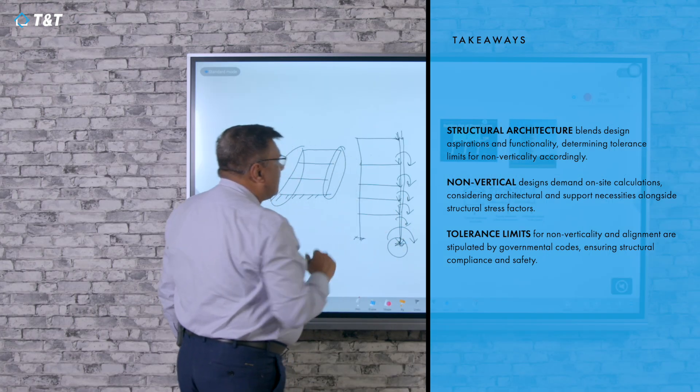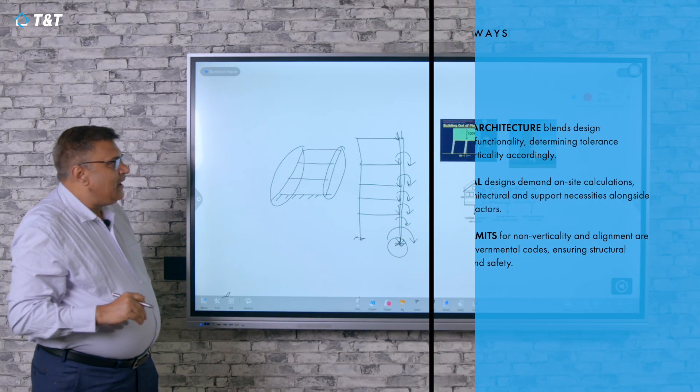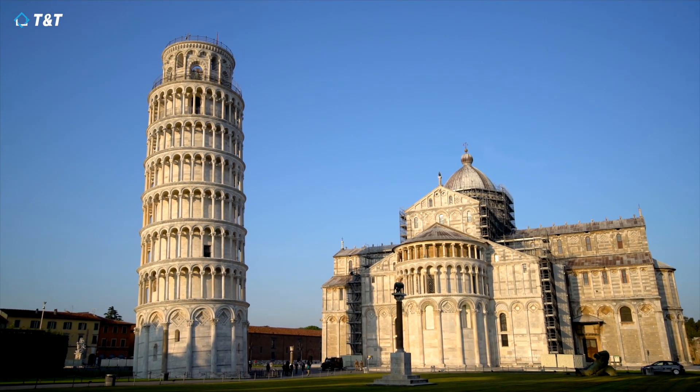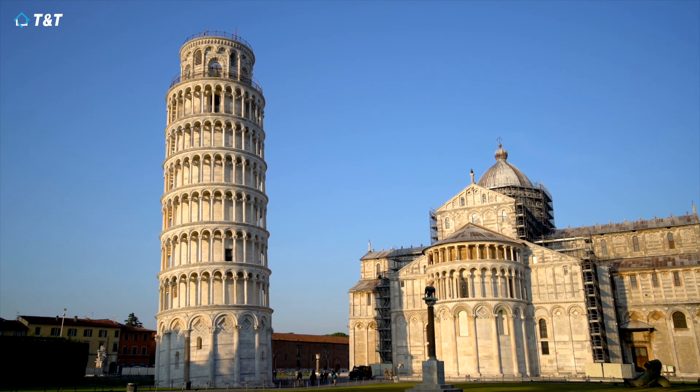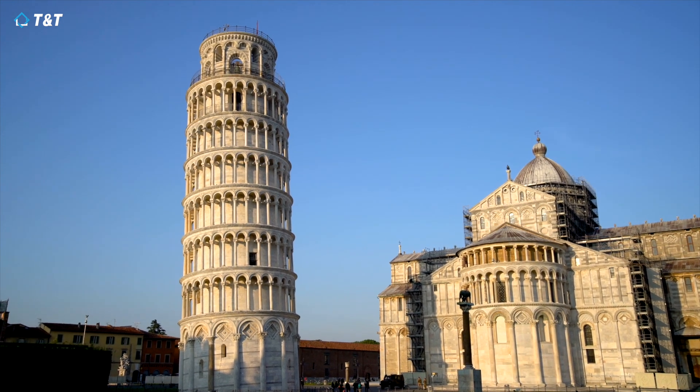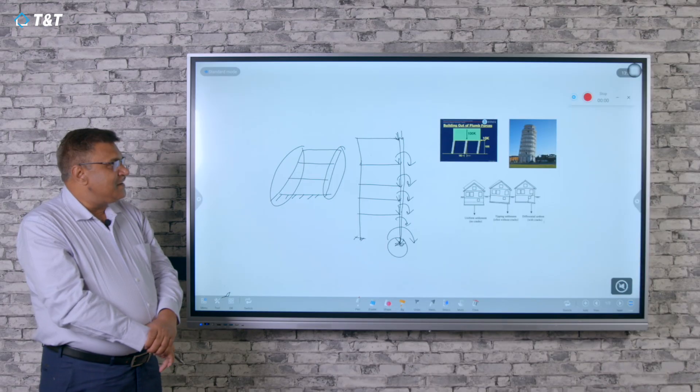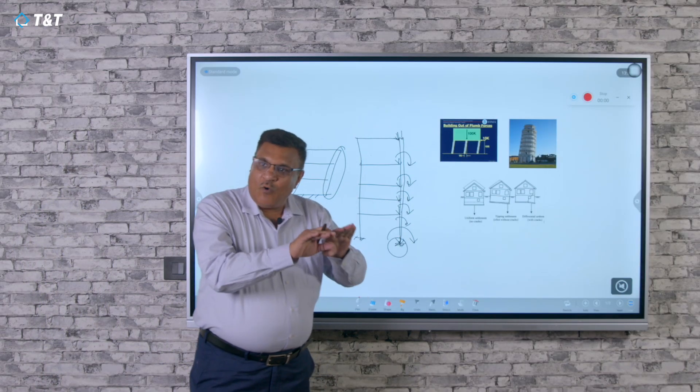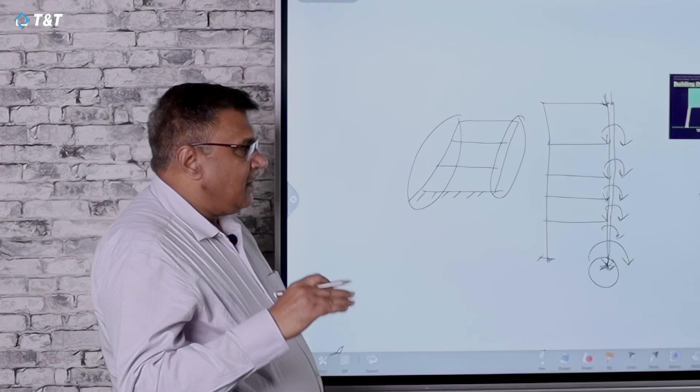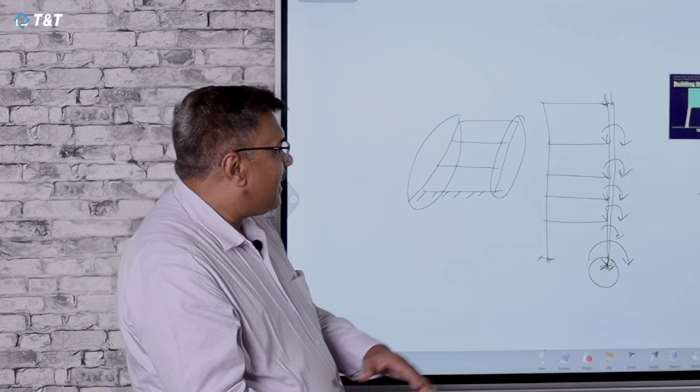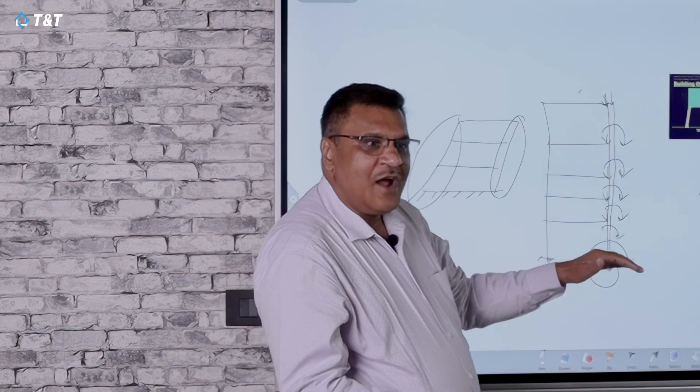Now coming to why buildings tilt, we may see the Tower of Pisa. Why is it tilted? There could be two reasons: either it is purposely designed, or it is badly designed and starts tilting without any construction error. This is called a design error. What is most important? The load - where is it going? To the ground.